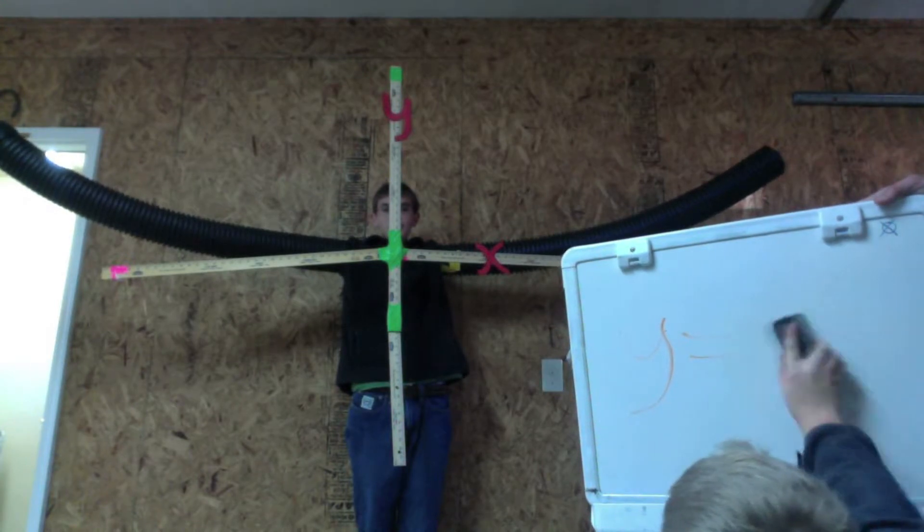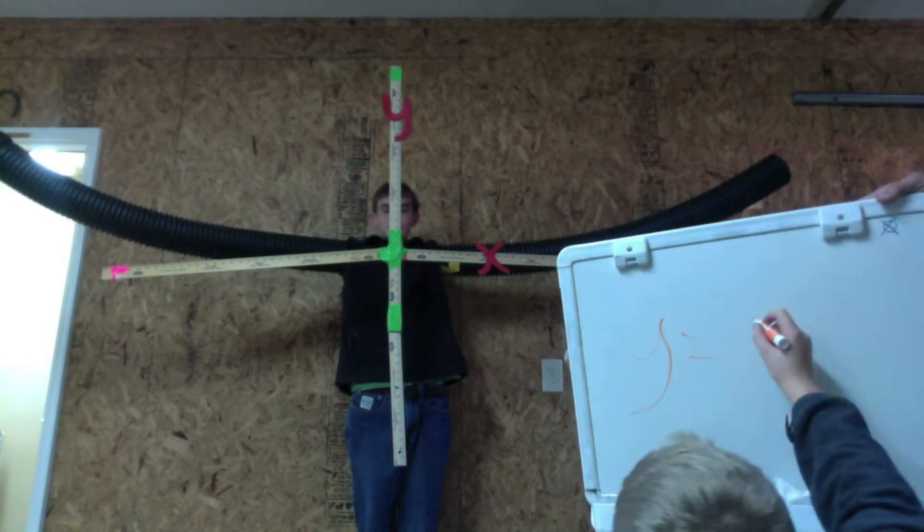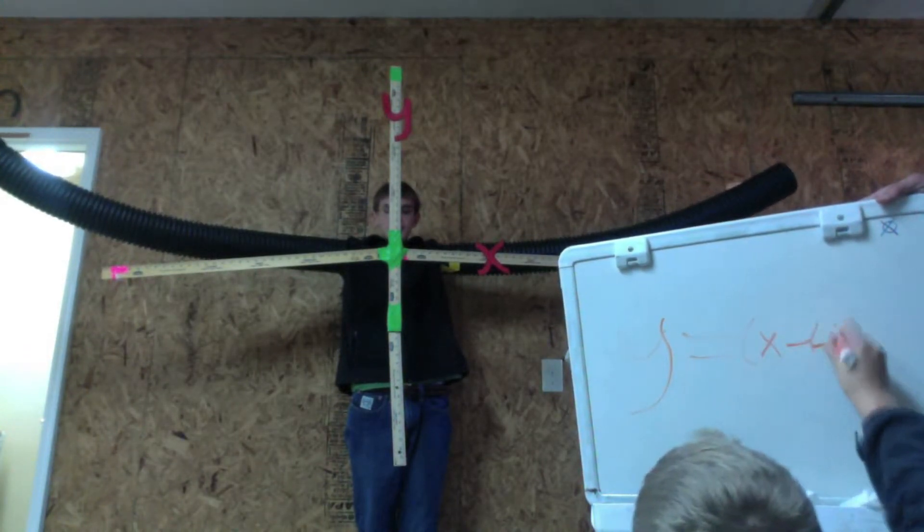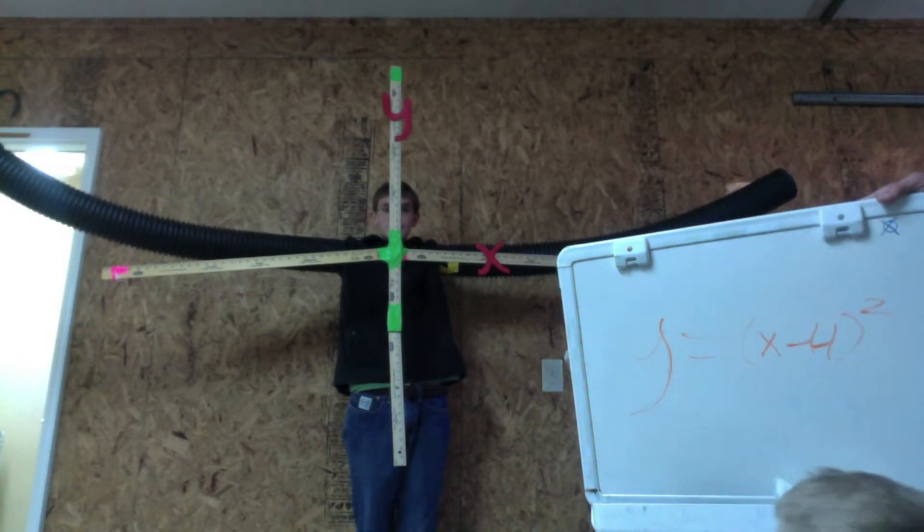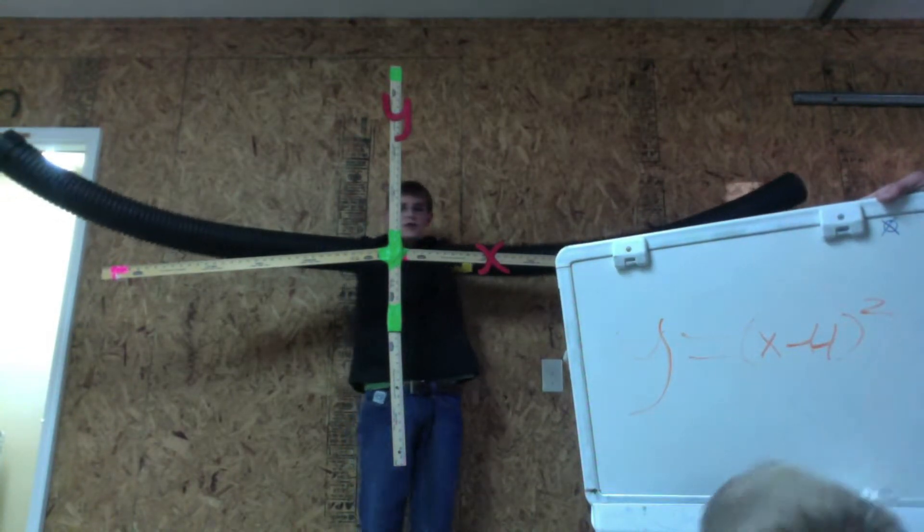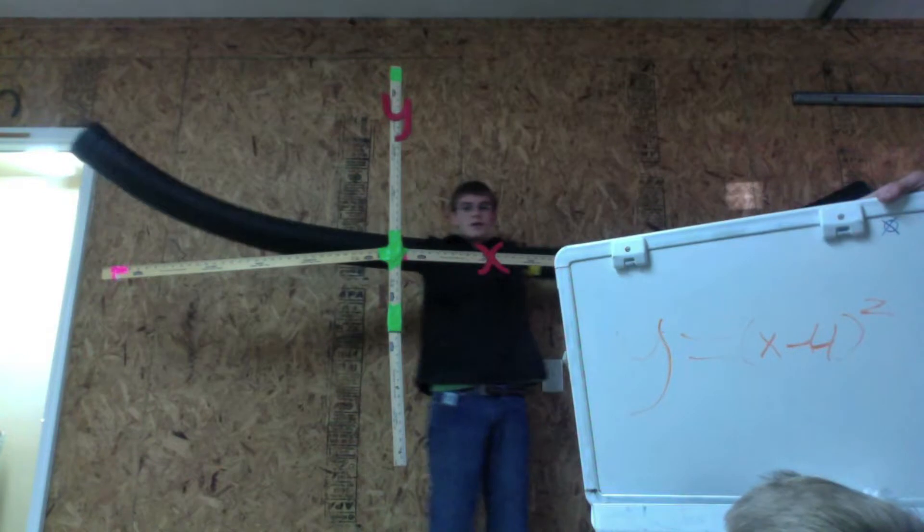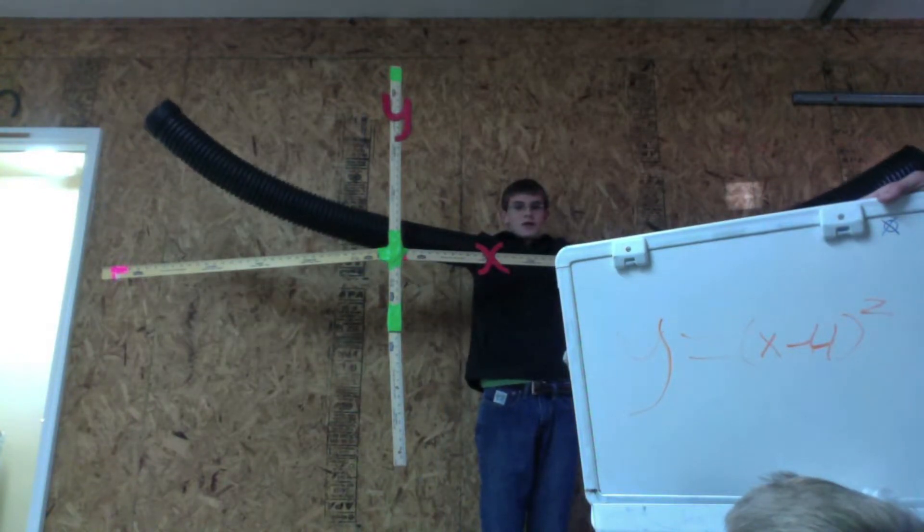This equation is in vertex form. y equals x minus 4 squared. It is moved 4 units to the right.